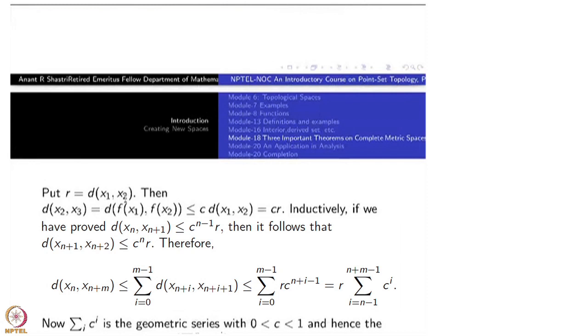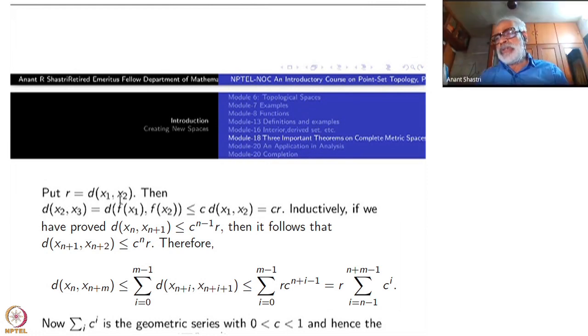So let us see how the proofs of these claims are coming. So put r equal to distance between x_1 and x_2. We are assuming that x_2 is not equal to x_1. If x_1 is equal to x_2, then there is nothing to bother about going further at all. Because then x_2 is f(x_1). If it is equal to x_1, we are home already. Put r equal to d(x_1, x_2). Then look at distance between x_2, x_3. That is by definition distance between f(x_1), f(x_2). But then this is by contraction mapping, less than or equal to c times the distance between x_1 and x_2, which we have denoted by r. So it is c times r.